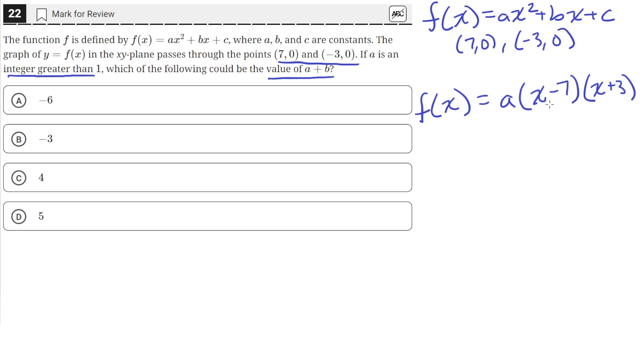So here, when x equals 7, 7 - 7 is 0, so this gives us f(x) = 0 at an x value of 7. So that's the first point, the first root. And then the second parenthesis is the second root, because when x equals negative 3, like in this point here, negative 3 + 3 is 0.